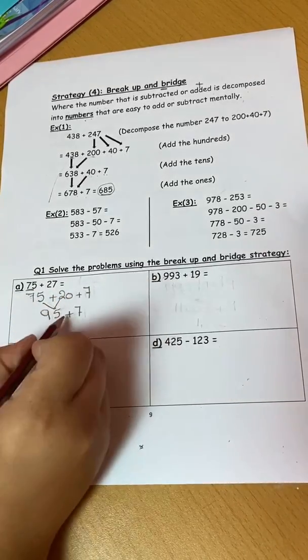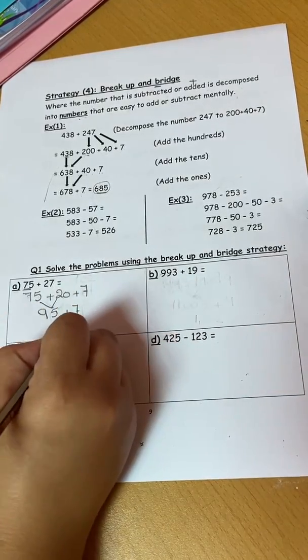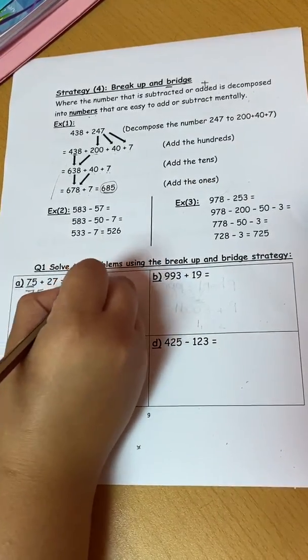Then I will put the 7 and I will add the ones together. So 95 plus 7 I got 102. So the answer is 102.